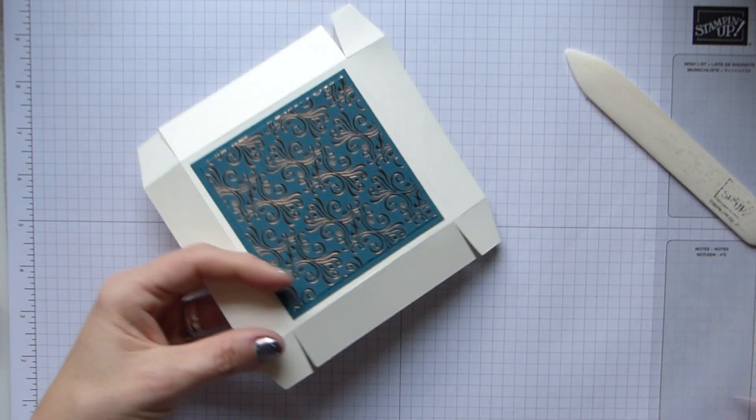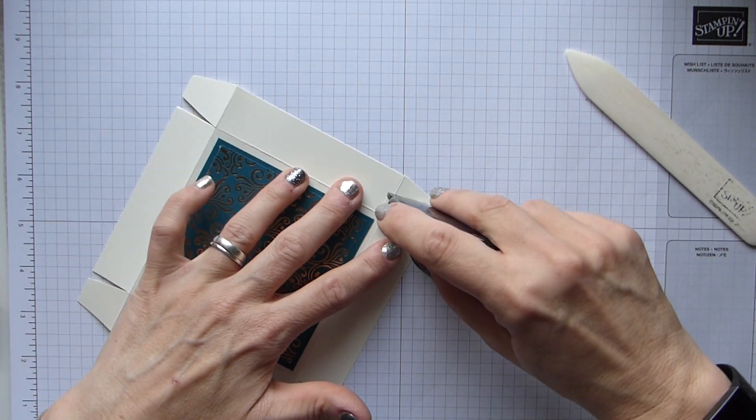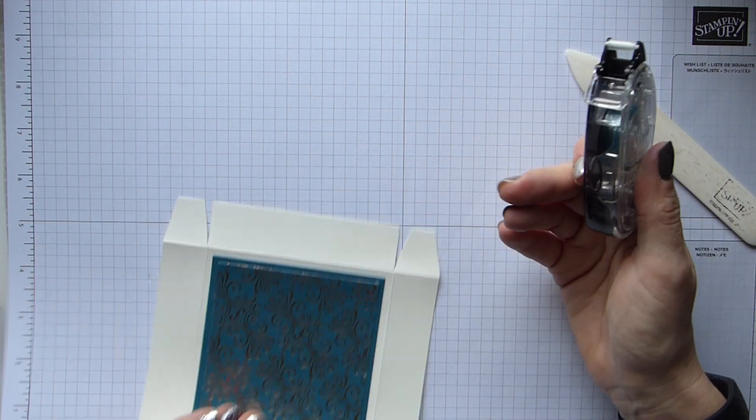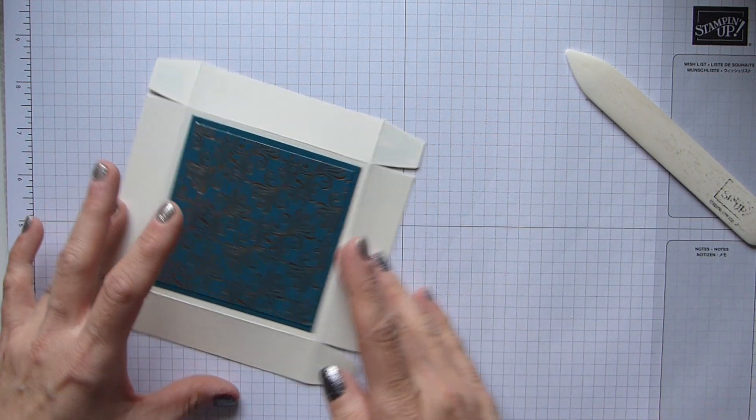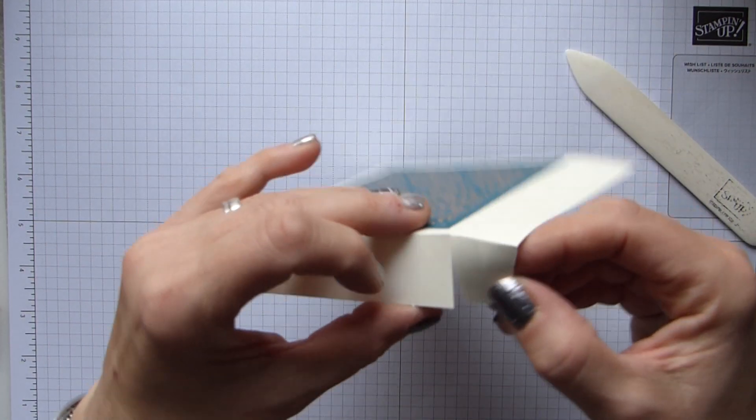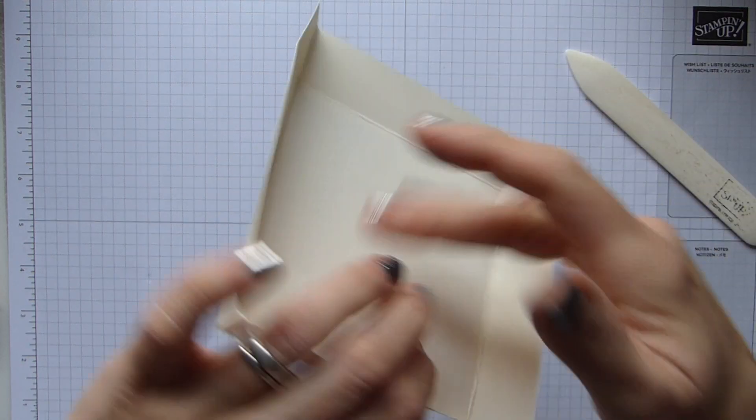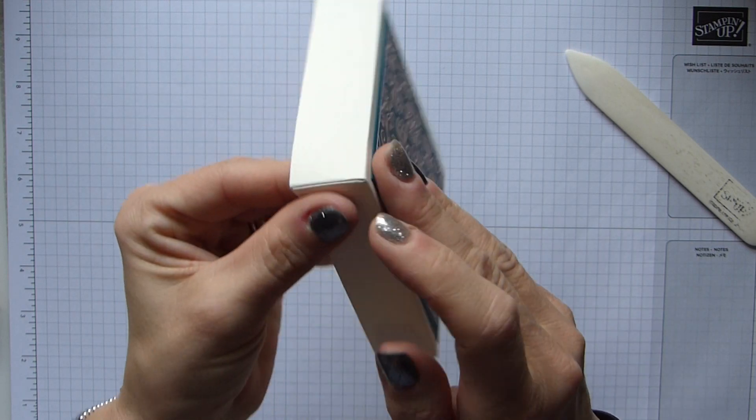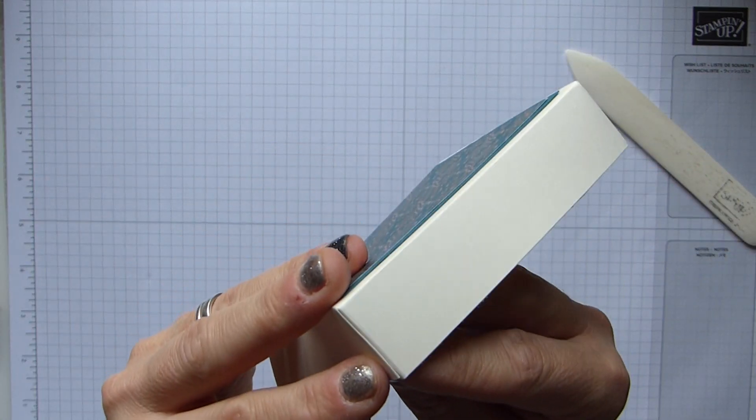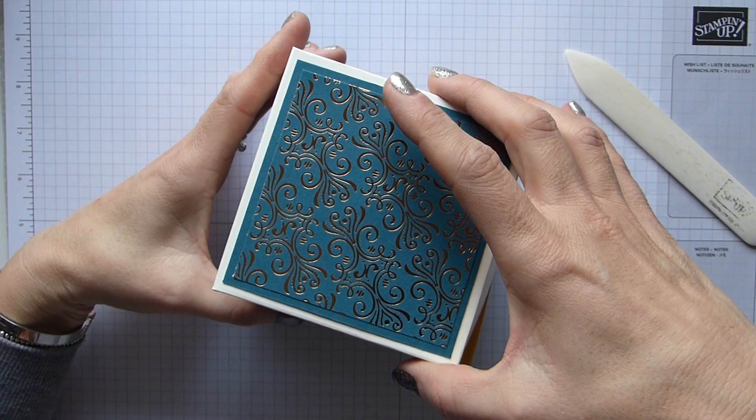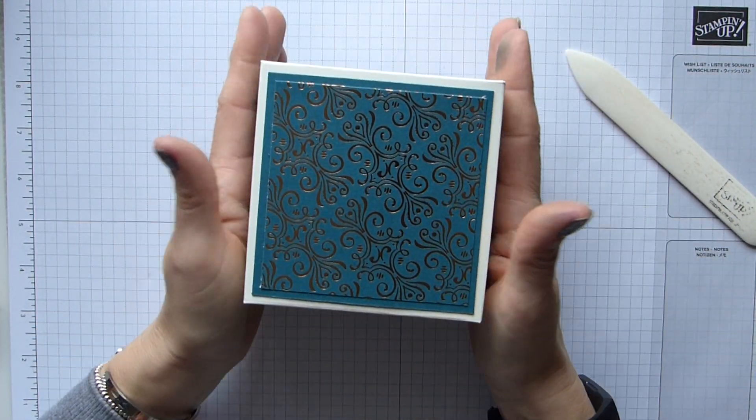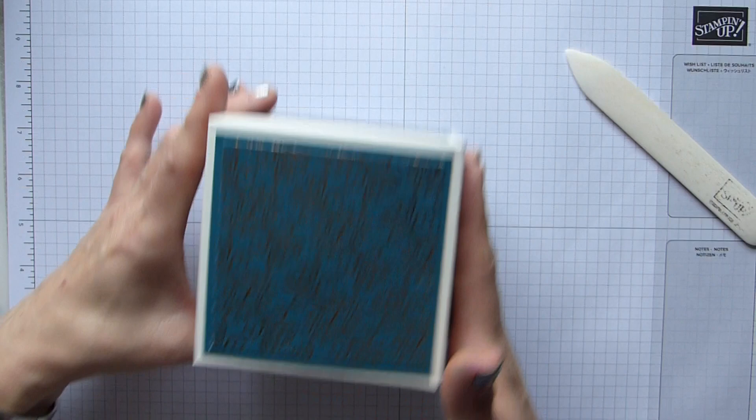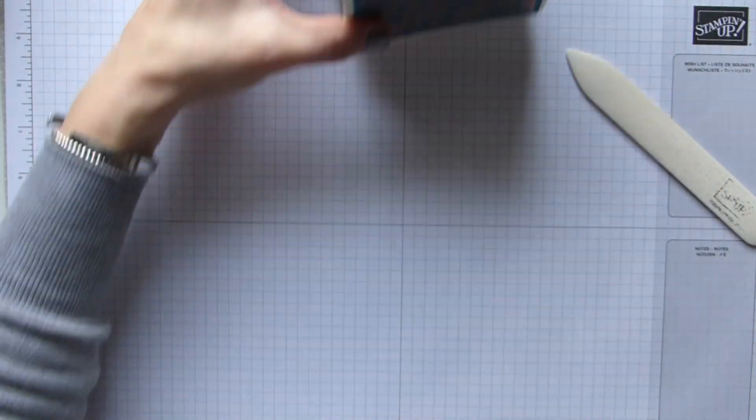So that's those done. And then exactly the same size layer again for the lid. So cardstock is three and three-quarters by three and three-quarters, which is 9.5 by 9.5. And then the DSP is three and a half by three and a half, which is 9 centimeters.